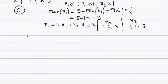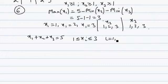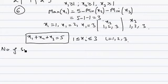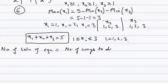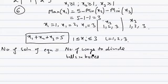So we have x1 + x2 + x3 = 5, where xi represents the number of balls in each box, and xi is between 1 and 3 for i = 1, 2, 3. We'll map this: the number of solutions of this integral equation is the same as the number of ways to divide balls in boxes under the constraint that every box gets at least one ball. Every solution of this equation represents a way balls can be placed in boxes.